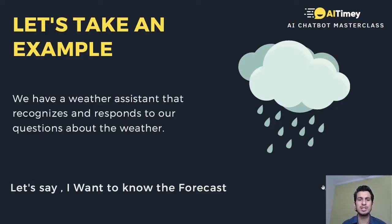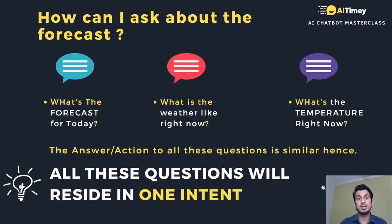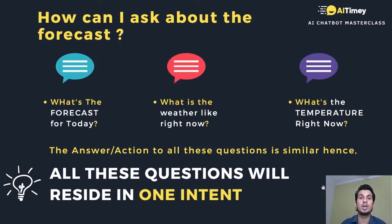So suppose we have a weather assistant that recognizes and responds to questions about weather. There could be a lot of questions about weather. For example, I want to know the weather forecast. There can be many ways to ask the same question — one way could be 'What is the forecast today?', another could be 'What is the weather like right now?', a third could be 'What's the temperature right now?' All these questions are demanding the same answer, and hence all these questions go under one intent.